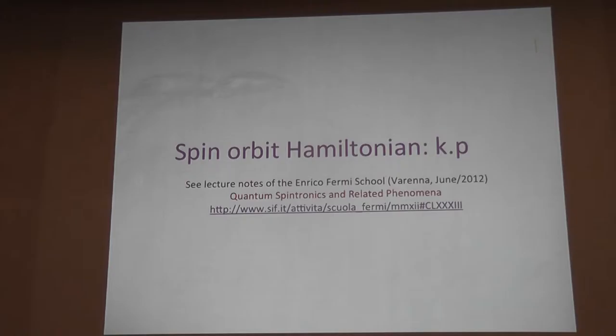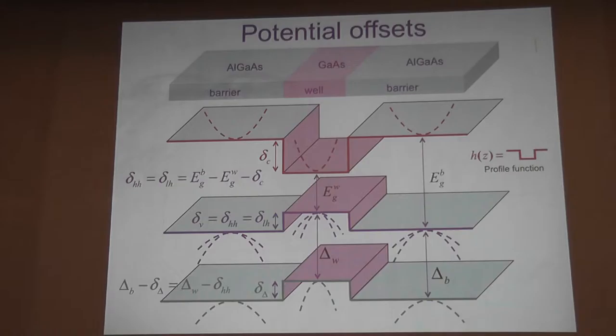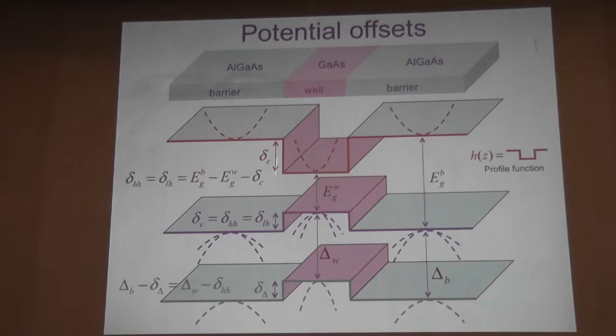I can go through the same type of argument in a two-dimensional electron gas at an interface, going to the reference frame of the electron. The key difference is that the gradient of the potential is along the z-direction, so the electric field is perpendicular to the interface. That brings a nice feature: you can control, in principle, the spin-orbit interaction. If I define an alpha constant as the expectation value of the slope of this potential, you can tune it by a gate.